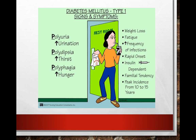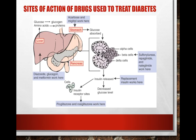The three P's associated with type 1 diabetes are polyuria, polydipsia, and polyphagia. We typically see weight loss, fatigue, and increased frequency of infections. It comes on very quickly. Patients are insulin dependent, there is a family tendency, and the peak incidence is from ages 10 to 15 years. The sites of action of the medications used to treat diabetes are listed here — some act in the liver, some in the pancreas at the beta cells where insulin is released.